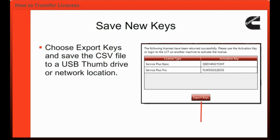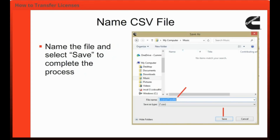New keys will be generated, and the License Configuration Tool will prompt you to save the keys for your record. Select Export Keys and save the CSV file to a USB thumb drive or network location. Then name the file and select Save to complete the process.